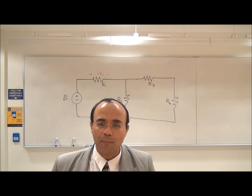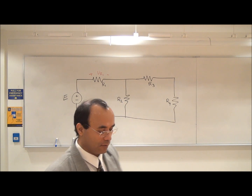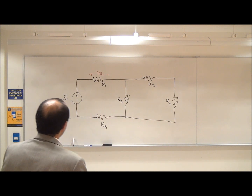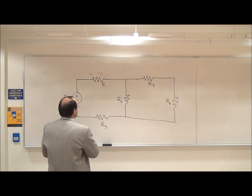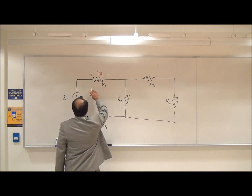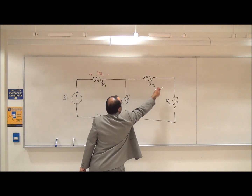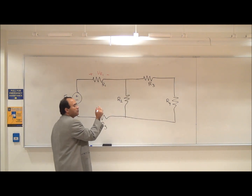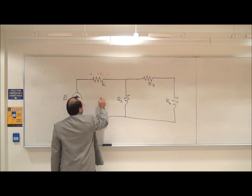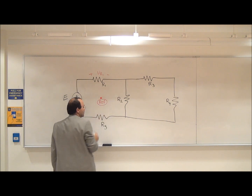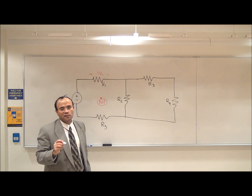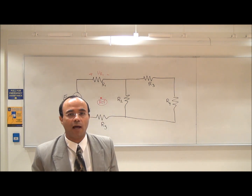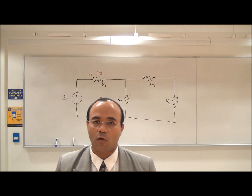In order to define node voltage, I need to have a reference node. The reference node can be any one of the nodes in the circuit. I'm going to assume the reference node is one of those nodes I just noted, and I'm going to call this the reference node. The reference node is assumed to have zero voltage — that's the convention we are going to follow.